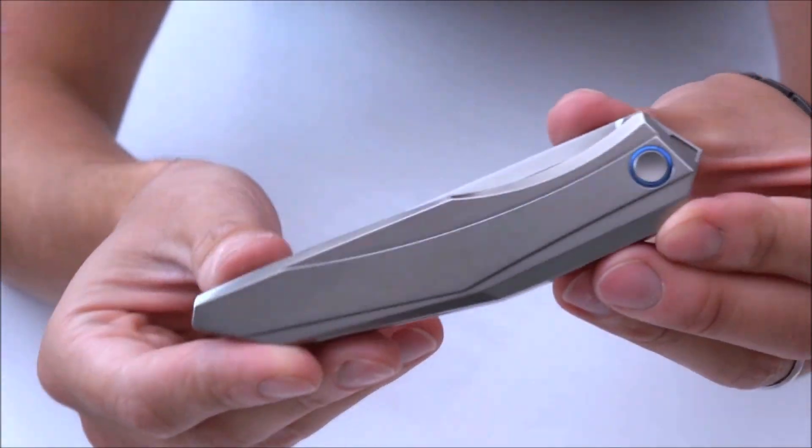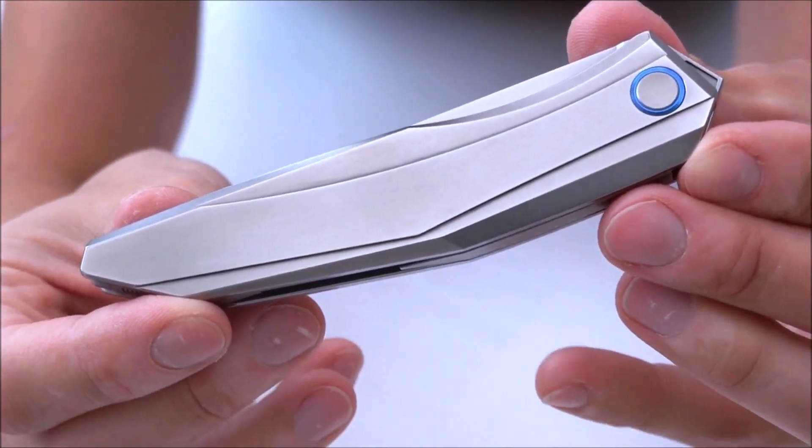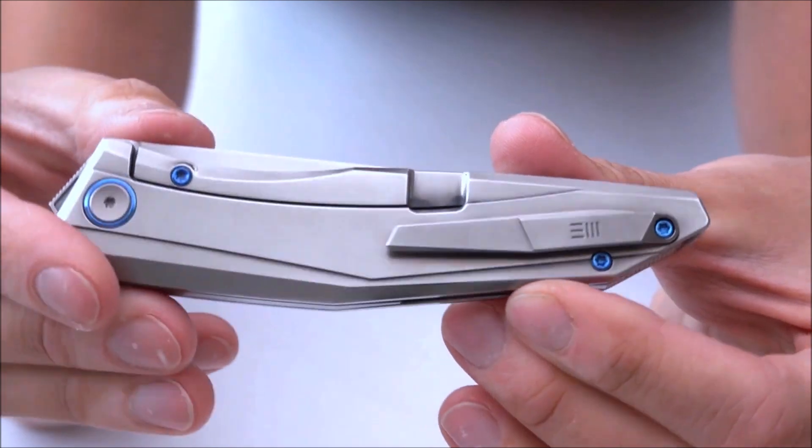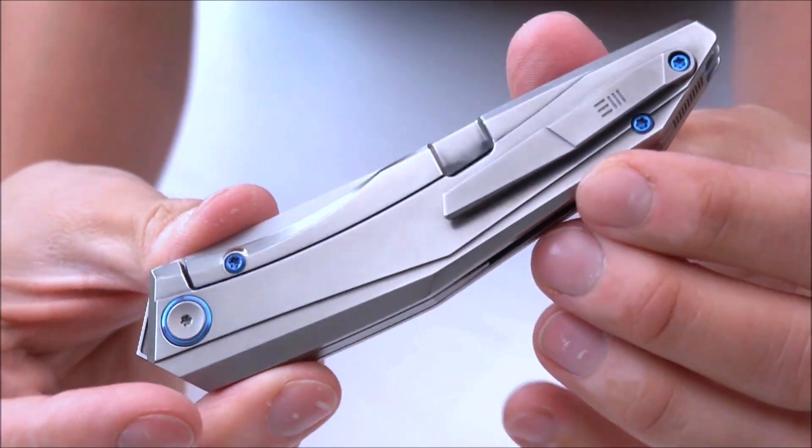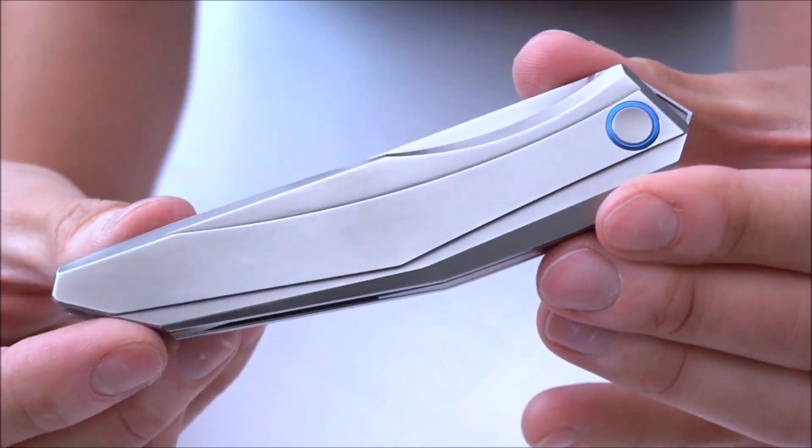And then we've got this pouch. Your typical WeKnife nylon pouch which I think is great and can carry two knives. It only carries one right now. And inside here we do have the knife itself and some plastic wrapping.